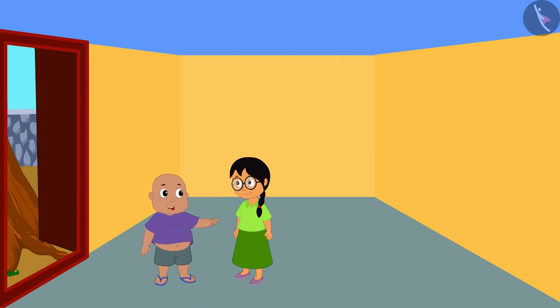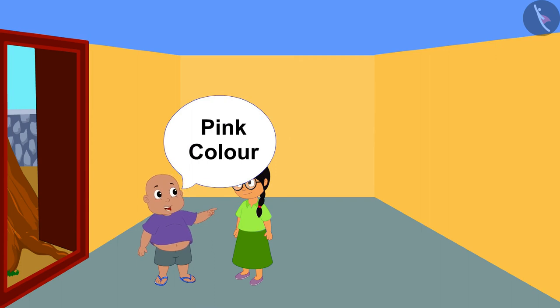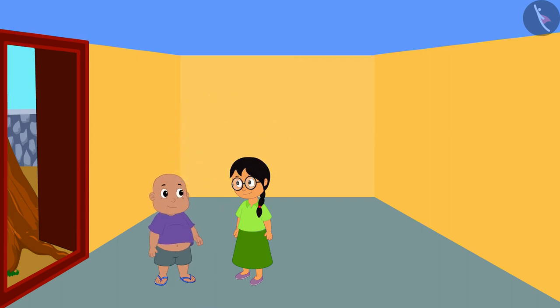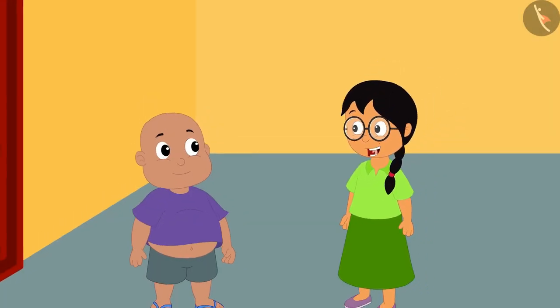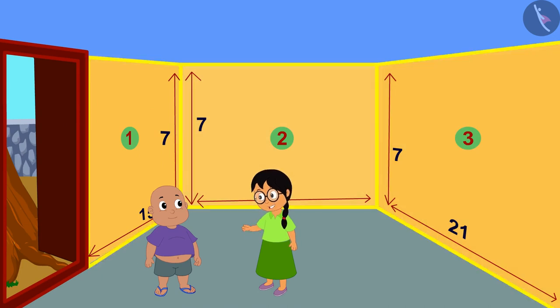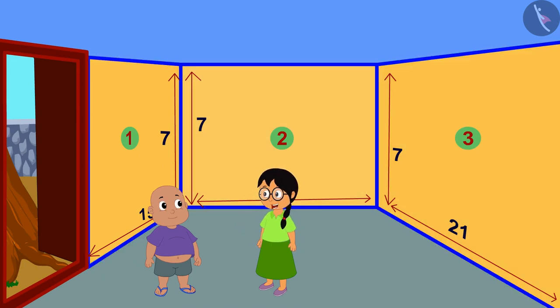Yes Meenu, then it will look very beautiful. You must definitely put your favorite pink color on the wall with the most area, Bablu said to Meenu. Wow Bablu, you have made a very good suggestion, but which of these three walls is the wall with the most area, Meenu asked Bablu.